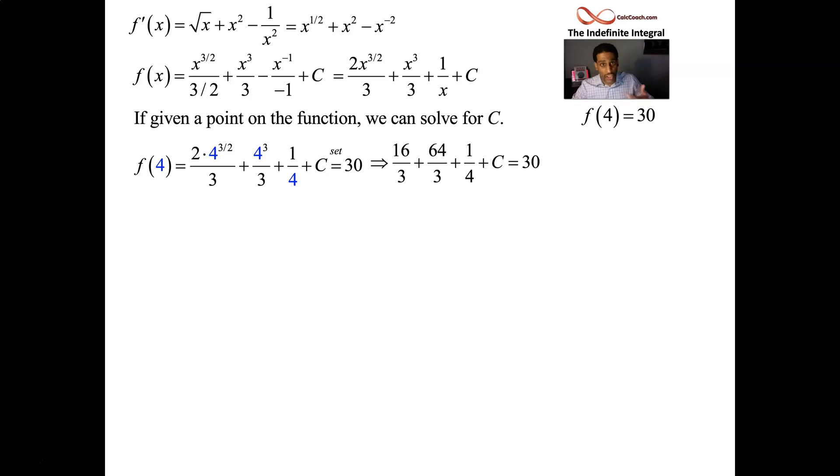And then plus c should be equal to 30. Let's find out what 30 is. 80 over 3. Subtract that over to the other side. 1 over 4. Subtract that over to the other side. We'll have c all by itself.